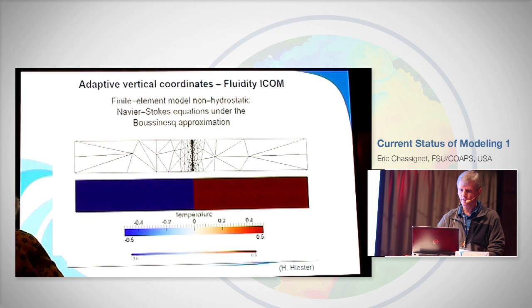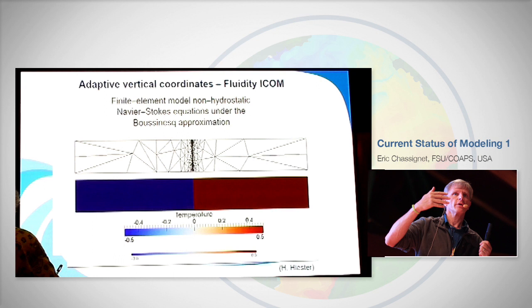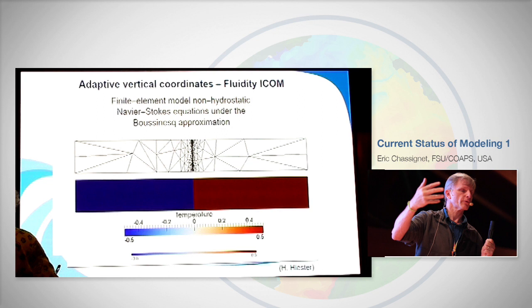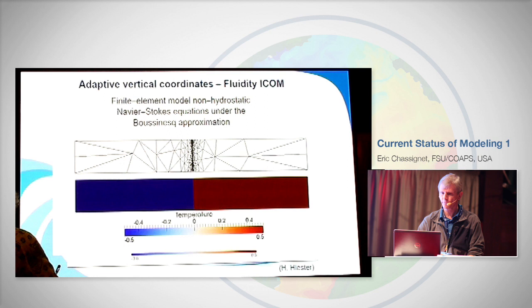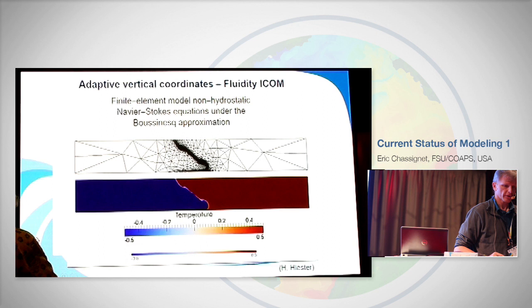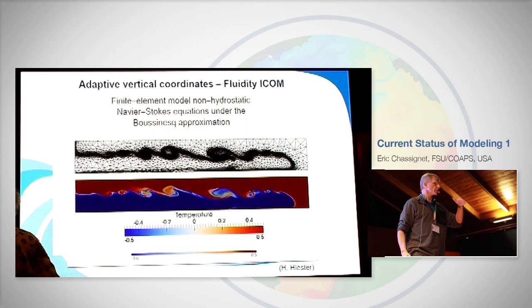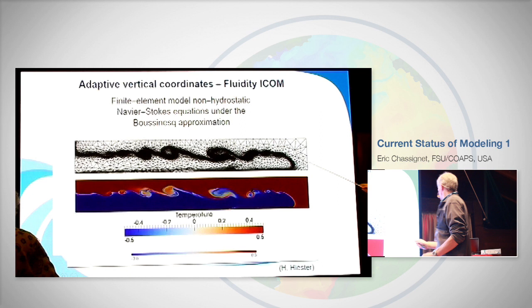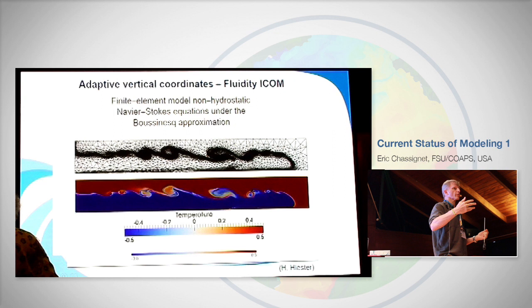What I showed before is how smooth the Lagrangian vertical coordinate looks when isopycnals mesh with a fixed-depth coordinate. You can use any type of vertical discretization — and that's what the group in England using Fluidity-HYCOM did with the dam-break problem using adaptive mesh. The grid size is large where there is no motion and increases resolution where there is strong vertical shear. The grid is adaptive — you put resolution where you need it. They have also translated this approach into the horizontal.